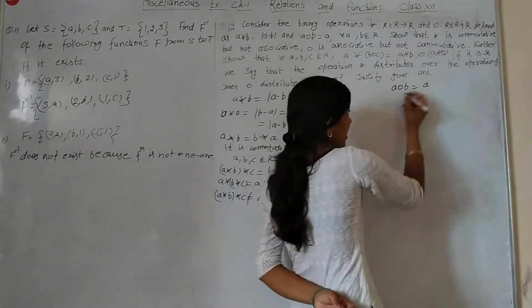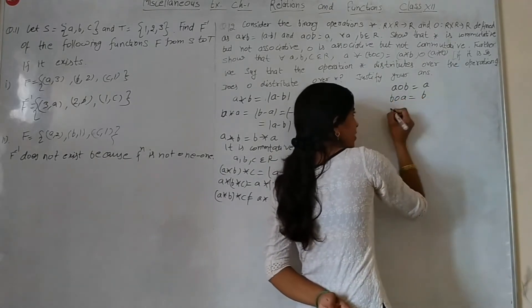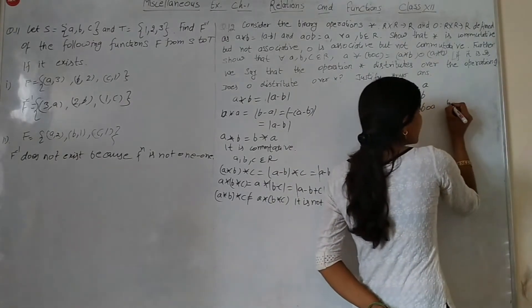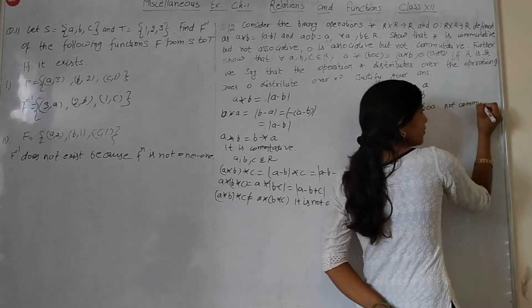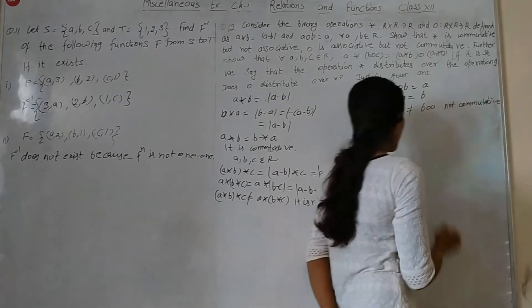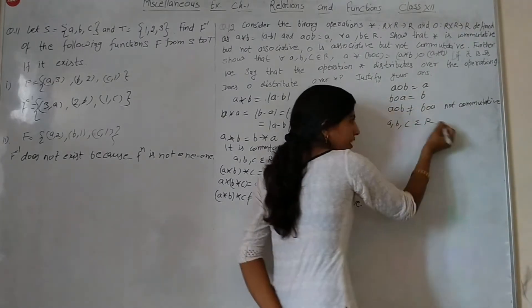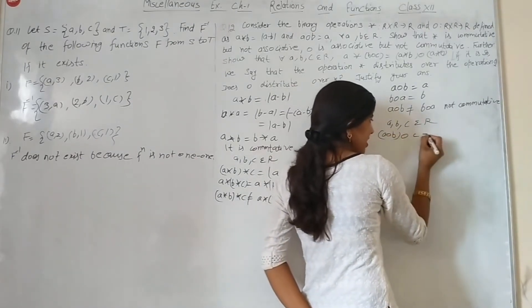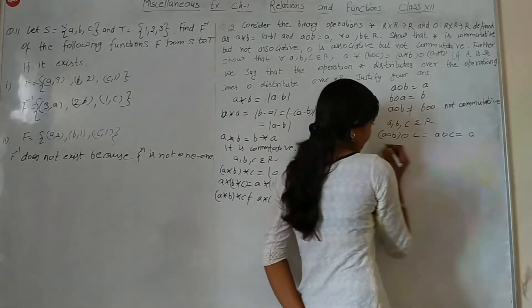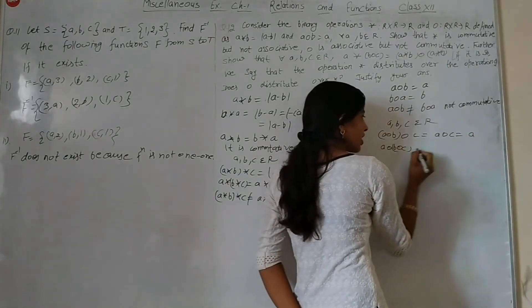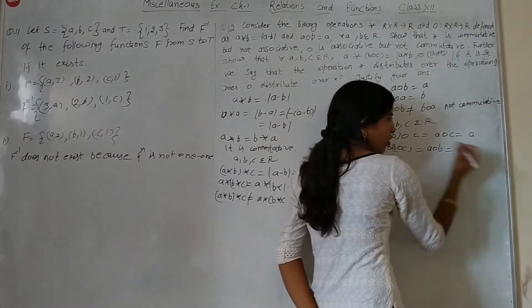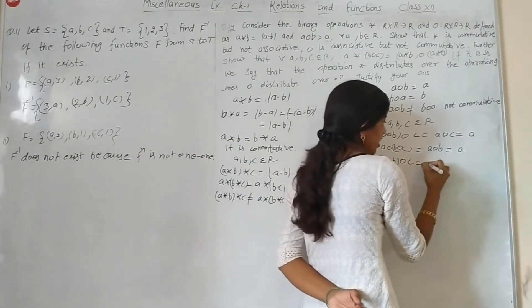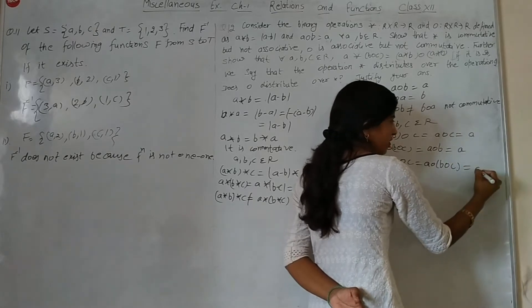For operation O: A O B is the first element, A. So A O B is not equal to B O A. Therefore, operation O is not commutative.